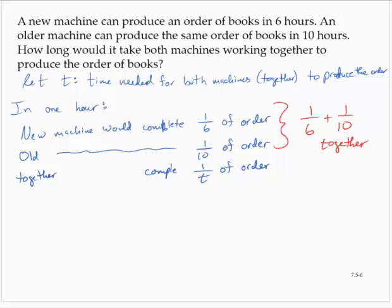So we can write the equation. One-sixth plus one-tenth should be equivalent to one over T. And now we can solve this equation using the techniques we've learned so far. The LCD is 30T.